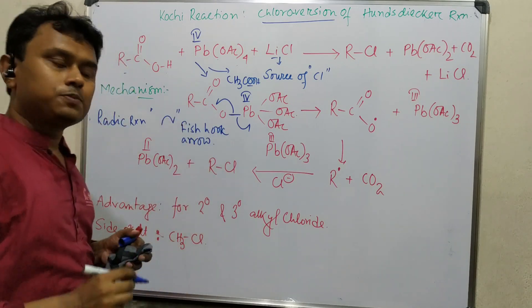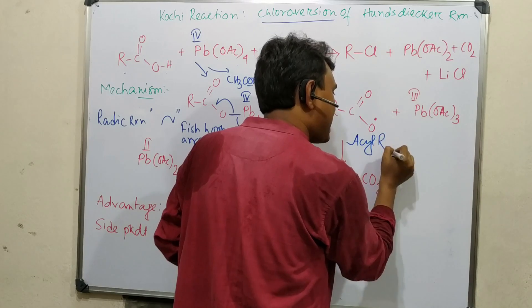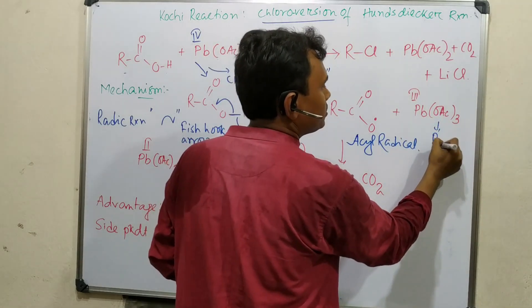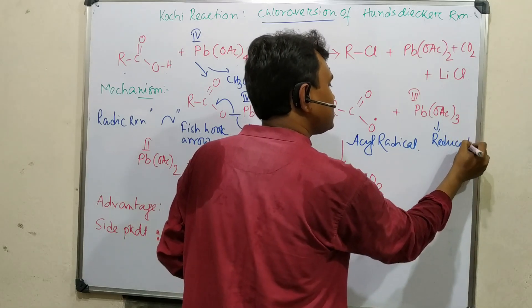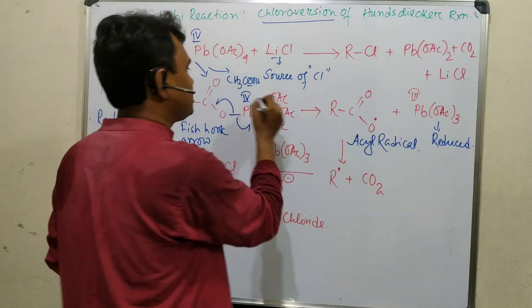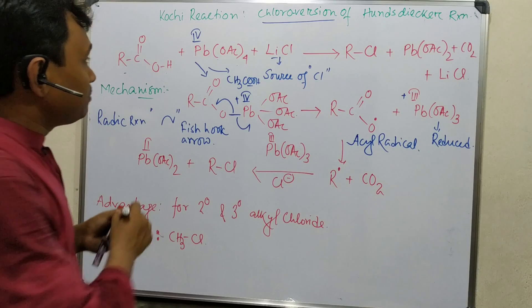This homolytic cleavage produces the acyl radical and lead-3 plus. This is a reduced species because previously it was lead plus 4, right now it is plus 3.